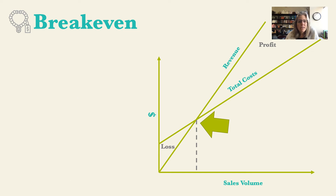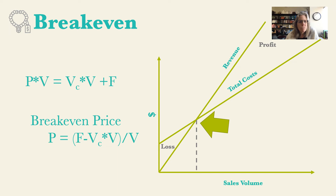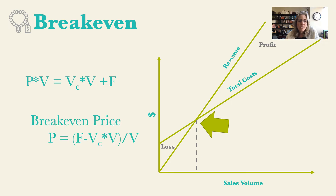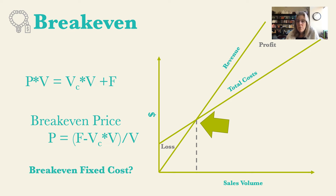We can also look at a break-even price. If we set revenue equal to total cost and solve for P instead of volume, we get the break-even price given a known volume. Similarly, we can calculate a break-even fixed cost if we have a known price, known volume, and known variable costs. Break-even can be applied in many different analysis techniques.